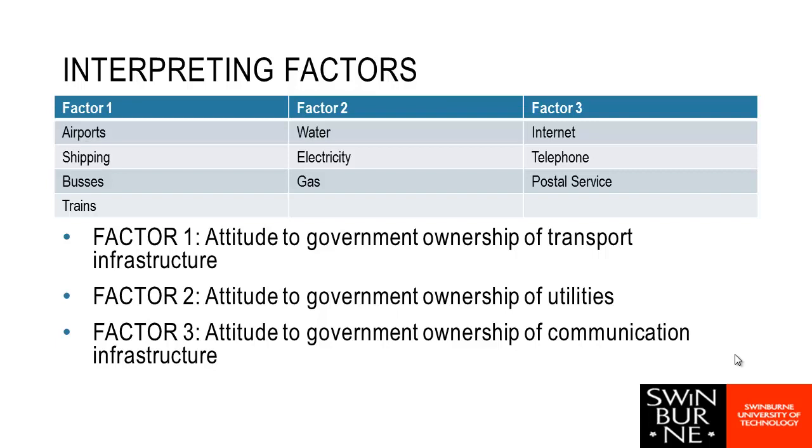When we're writing reports and particularly when we're writing recommendations, it is important that we use the names of the factors. We don't just talk about factor one and factor two and factor three. We would talk about attitude to government ownership of transport infrastructure, attitude to government ownership of utilities, attitude to government ownership of communication. So we would make sure we're using the full names. We didn't just talk about factor one, factor two, factor three.